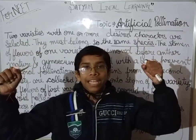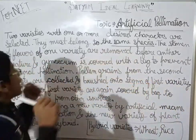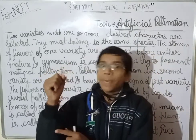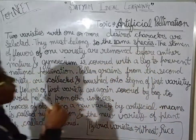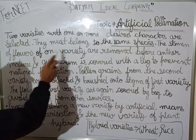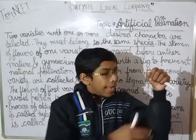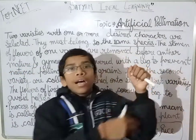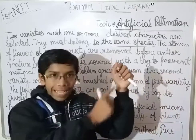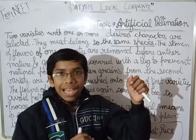This is the first variety and this is the second variety. Both plants have stamen, gynoecium, and androecium. From one of them, I will cut the stamen before it matures. The stamen of the flowers of one variety are removed before the anther matures.